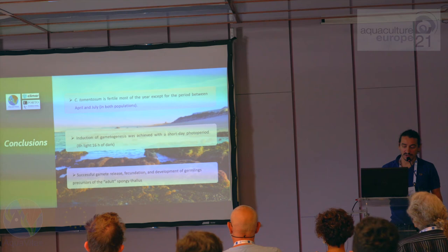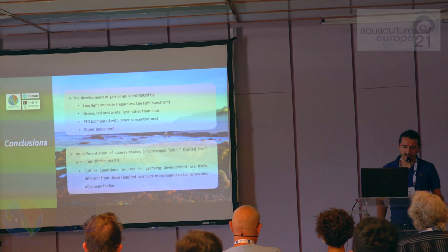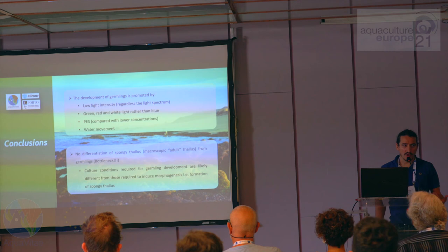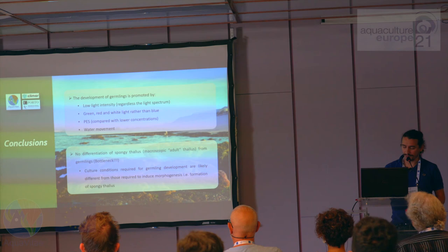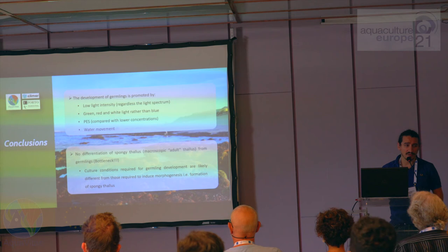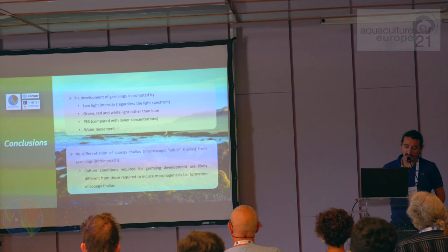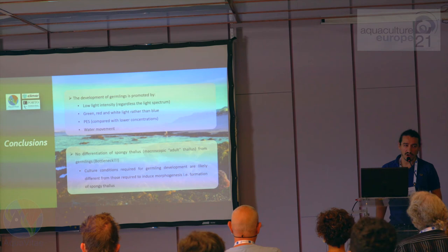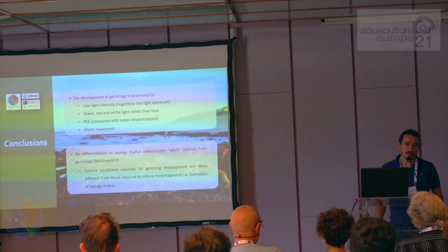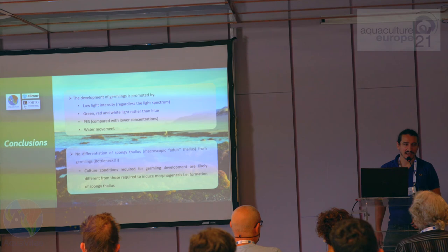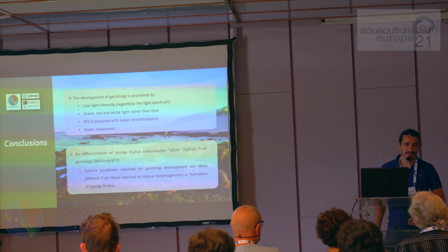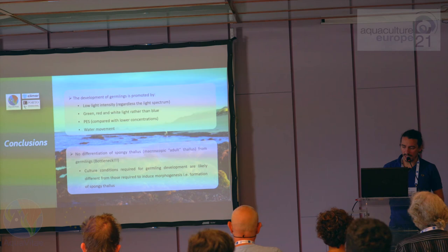In conclusion, there are important seasonal variations in the reproductive status of this species, which is reproductive for most of the year. We can induce gametogenesis by applying a short-day photoperiod. We have successfully released gametes and selected ideal conditions for germling development: low light intensity of 20 microeinsteins, growth equally well in green, red, and white light over blue light, PESH medium preferred, and development promoted by water movement. No morphogenesis was achieved — we did not obtain adult Codium — and we presume the culture conditions good for germling development are not yet suitable for morphogenesis induction, which is our focus for the coming months.